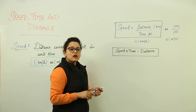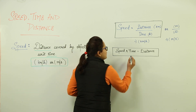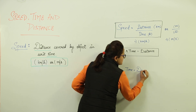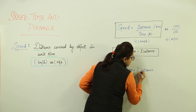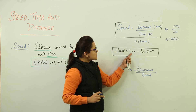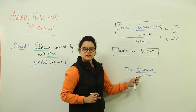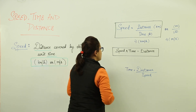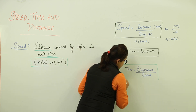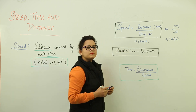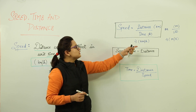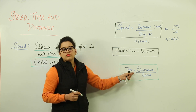Now let us derive the formula for time. We can conclude that time equals distance over speed. Because speed was multiplied with time, when transposed to the other side it gets divided. So we get: time is equal to distance upon speed. These are the three basic formulas for this chapter — they will be used repeatedly. This formula is for calculating speed, this one for distance, and this one for time.